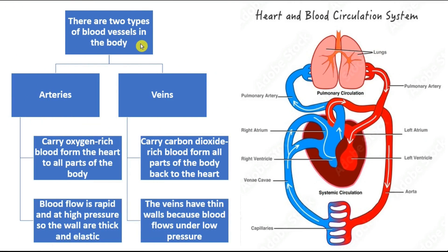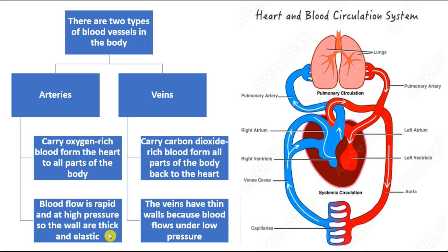There are two types of blood vessels in the body: arteries and veins. Arteries carry oxygen-rich blood from the heart to all parts of the body. Blood flow in arteries is rapid and at high pressure, so the walls of the arteries are thick and elastic.